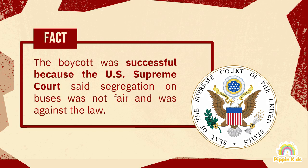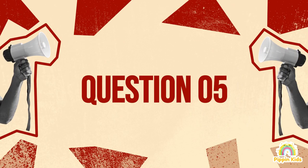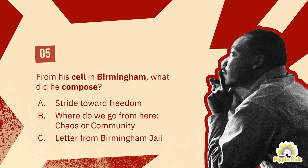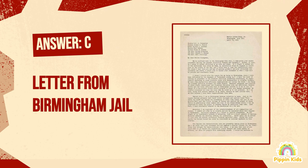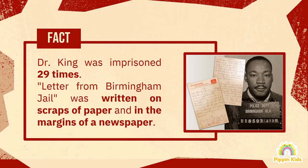Question number five: from his cell in Birmingham, what did he compose? A) Stride Toward Freedom. B) Where Do We Go From Here: Chaos or Community? C) Letter from Birmingham Jail. The answer is C, Letter from Birmingham Jail. According to the King Center, he was imprisoned 29 times.